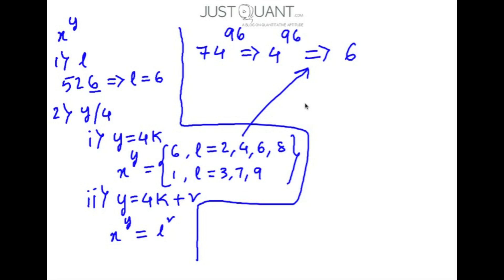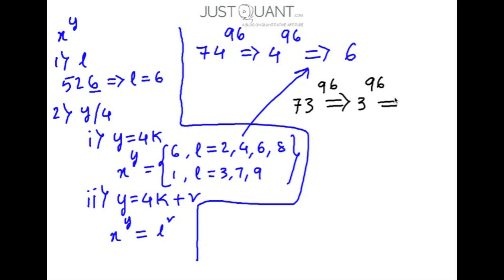In the next case, if we consider 73 to the power of 96, the unit digit in 73 is 3 and the power is 96. Since 96 is exactly divisible by 4 and l is 3, this gives us 1 as the unit digit.